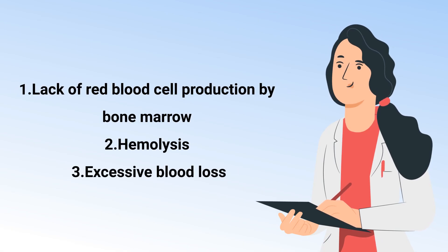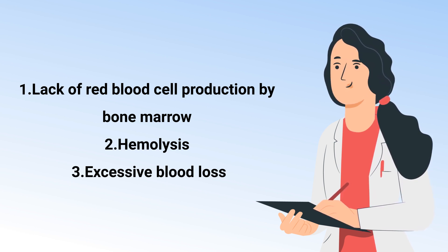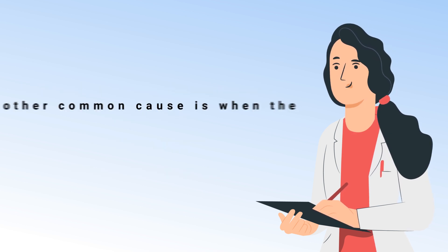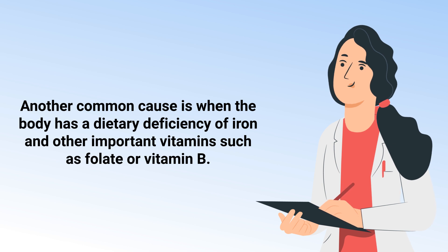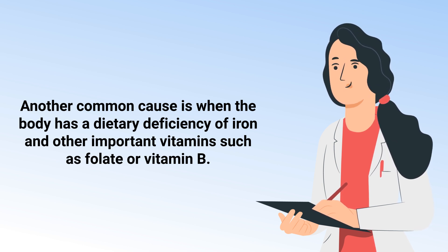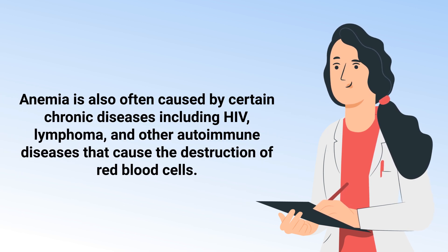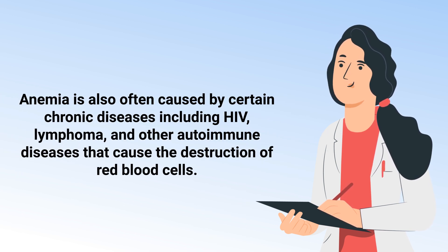The primary causes of anemia include a lack of red blood cell production by bone marrow, hemolysis — which is red blood cell destruction — or when the body has experienced excessive blood loss. Another common cause is a dietary deficiency of iron or other important vitamins such as folate or vitamin B.